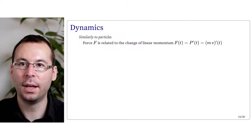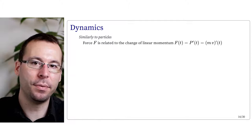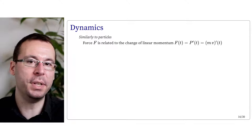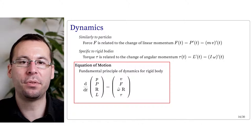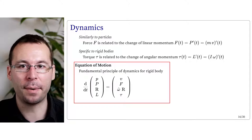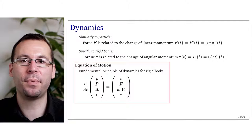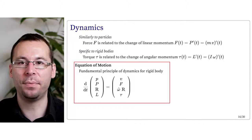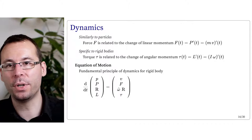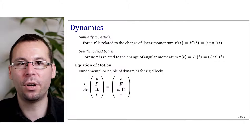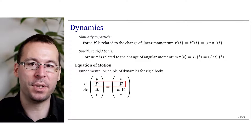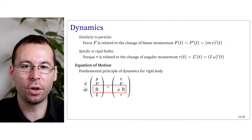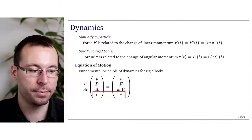We can now express the relations of dynamics applied to these integral quantities. The first is similar to particles: the net force F gives the change of linear momentum, so F(t) equals p'(t) equals M times v'(t). The second is specific to rigid bodies: the torque tau gives the change of angular momentum, so tau(t) equals the derivative of L, which is the inertia matrix times omega'(t). The global equation of motion involves four quantities — position, linear momentum, orientation R, and angular momentum L — and relates their derivatives: p' is velocity, P' is net force, R' is omega-hat times R, and L' is the total torque.